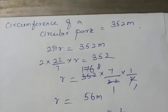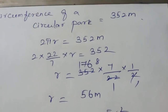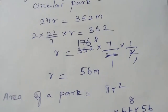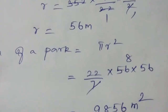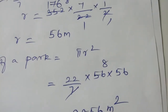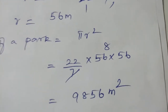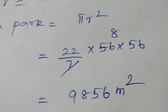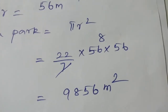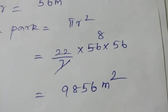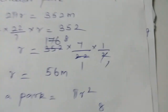Now we found r equals 56 meters, so we substitute into the area formula pi r squared. That is 22 by 7 into 56 into 56, giving an area of 9856 meter squared. Remember, area must always be written in square units — meter squared.